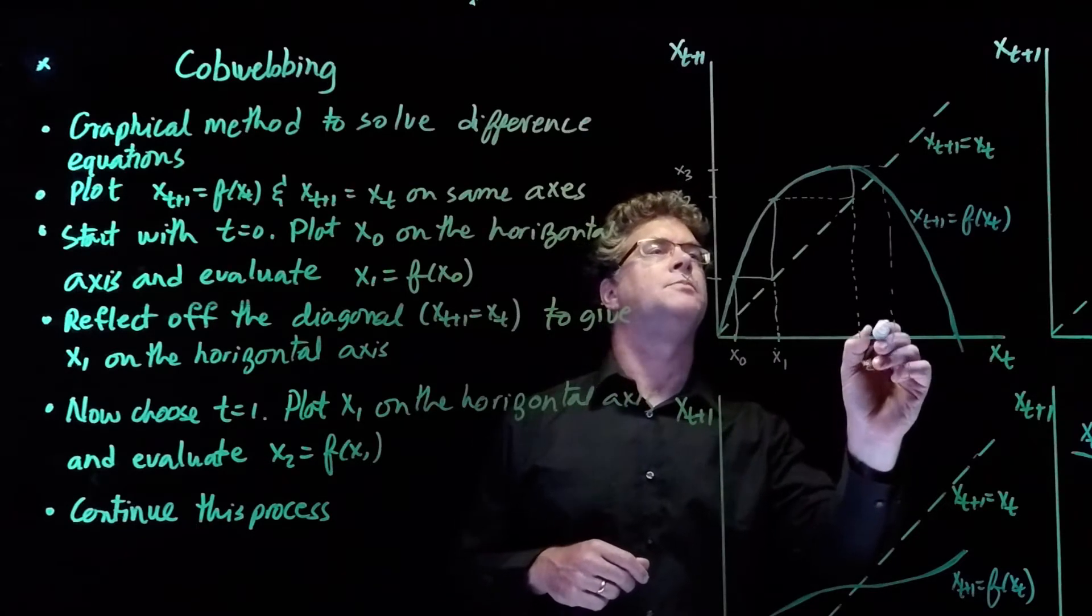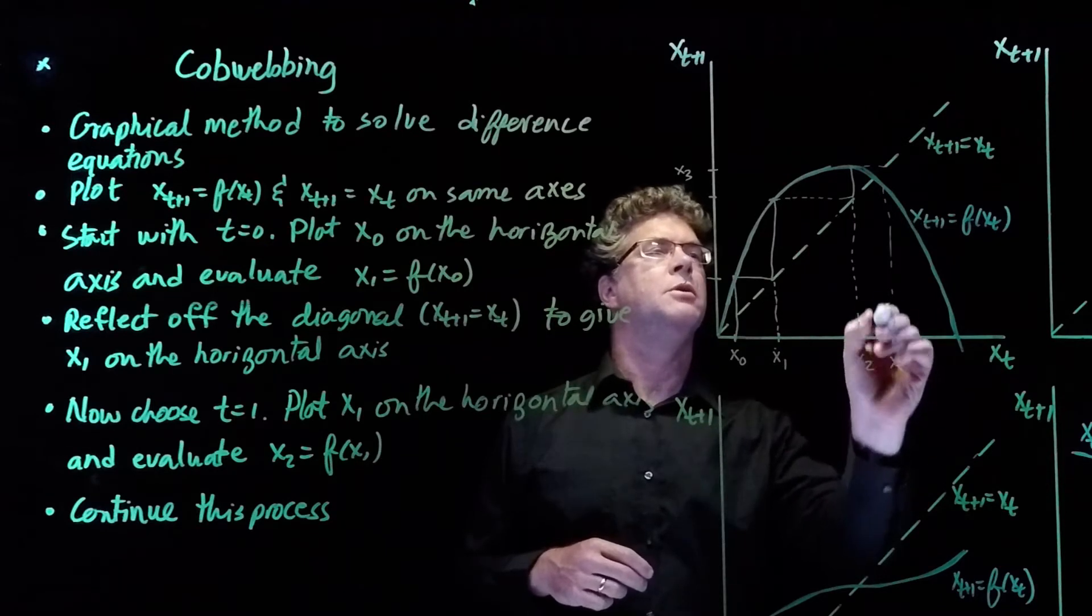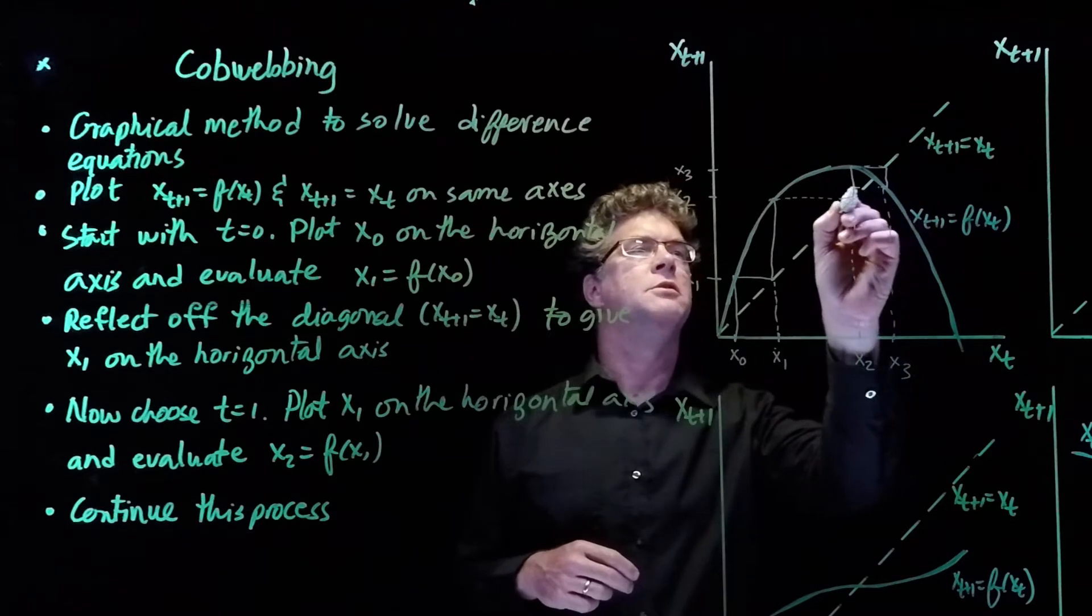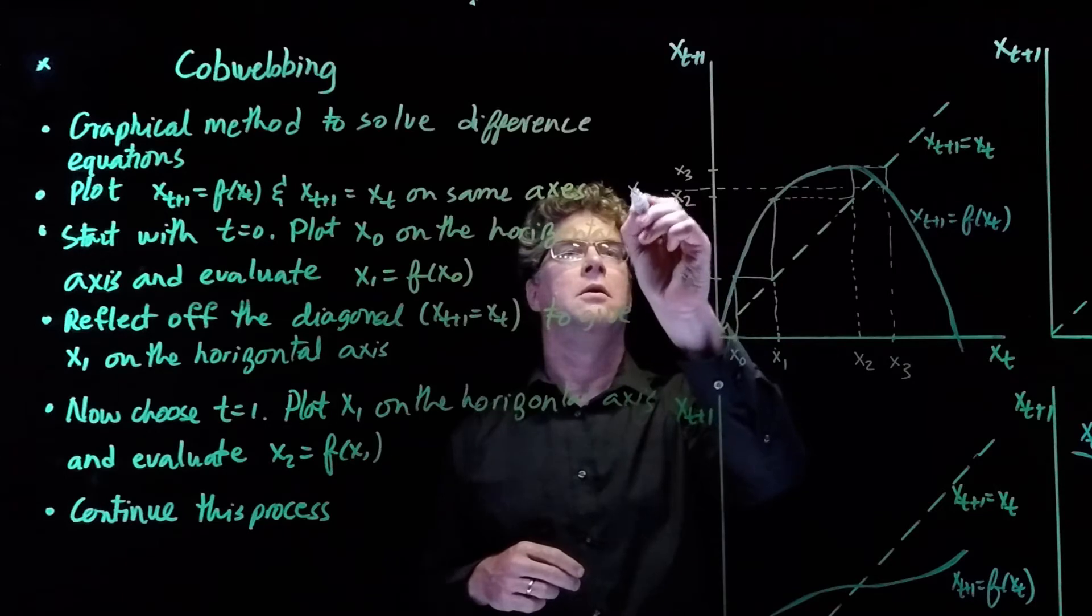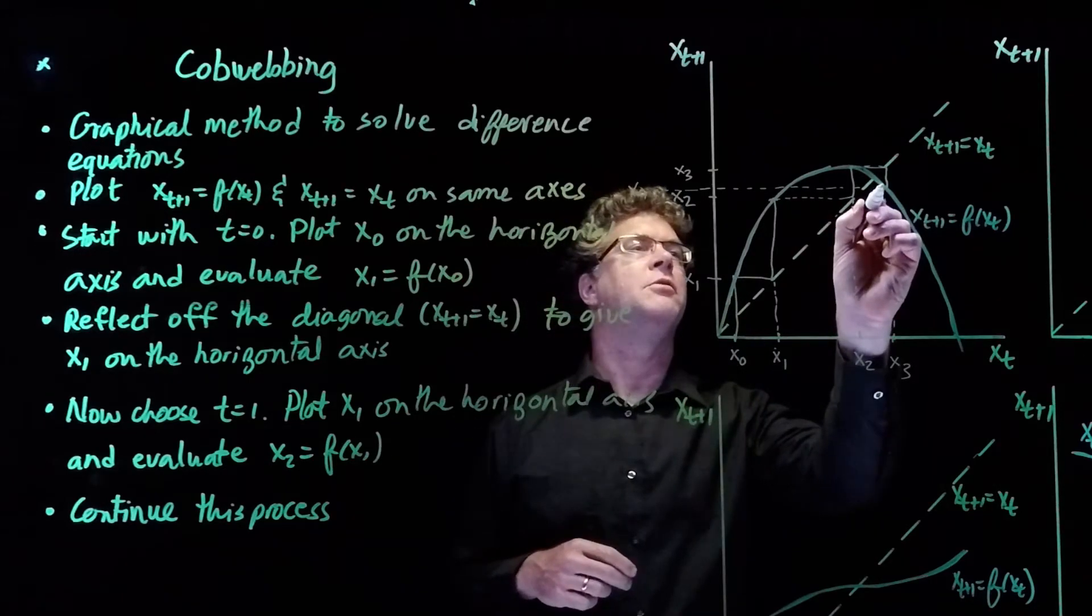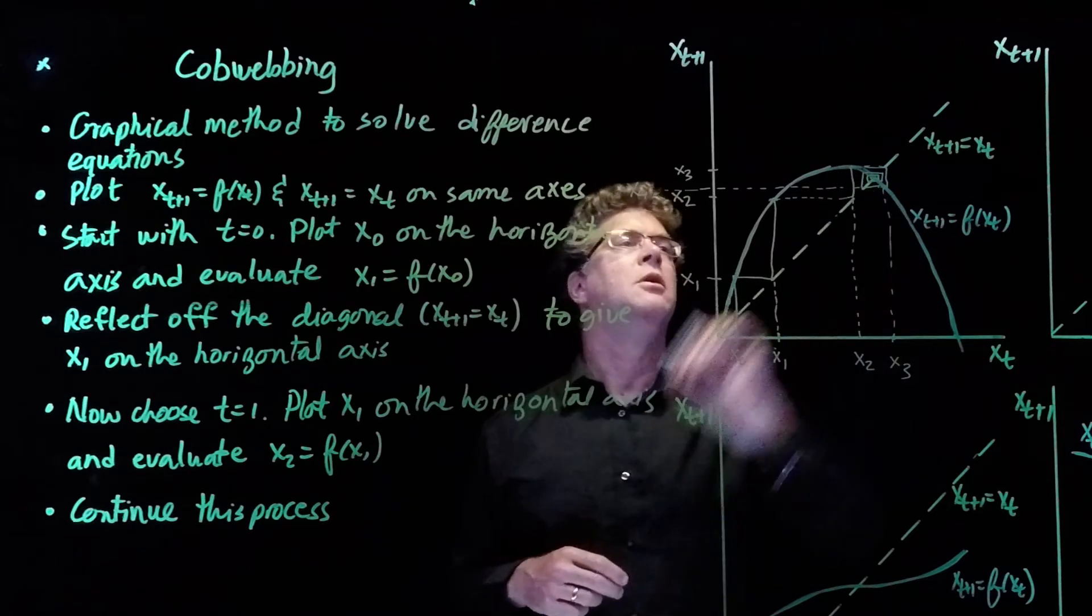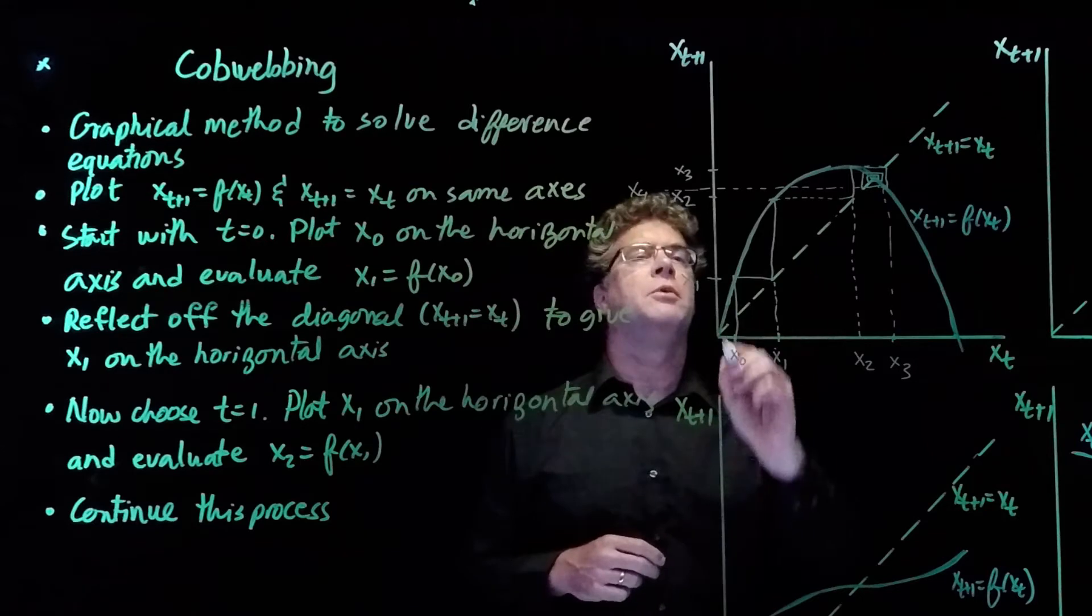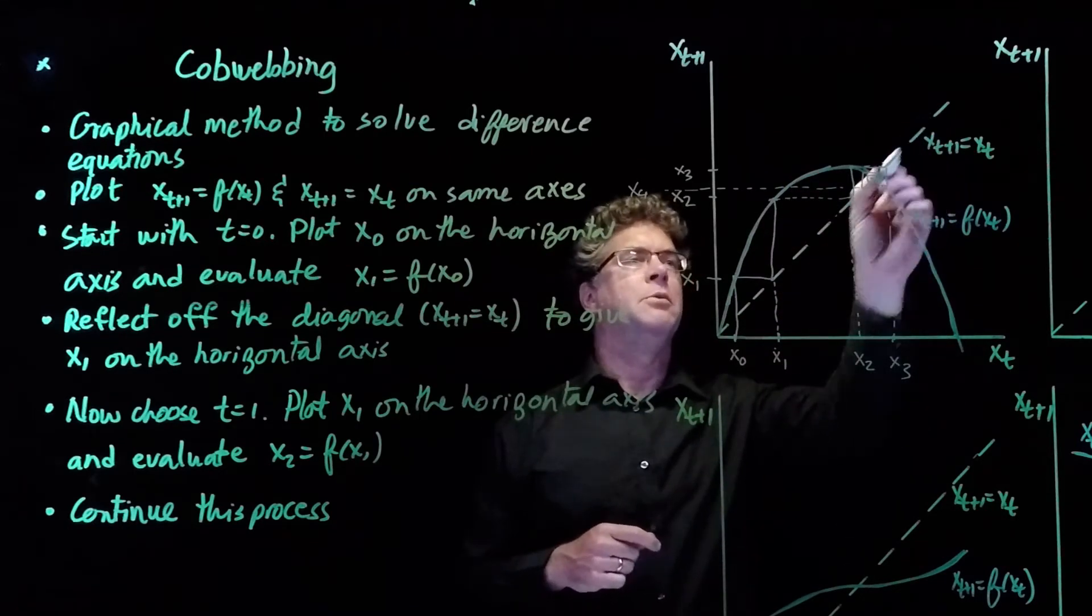Going back up, we then compute f(x_3), which is x_4, and so on and so forth. And so if we continue this process, we're moving in closer and closer to where the function line crosses the x_t+1 = x_t line.